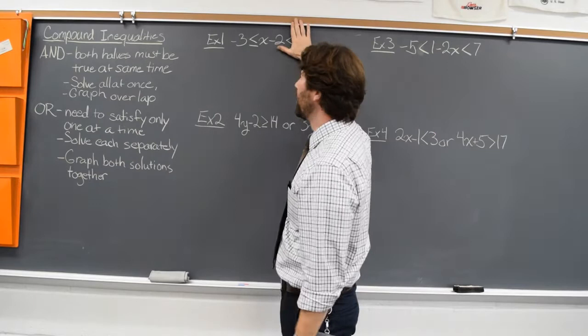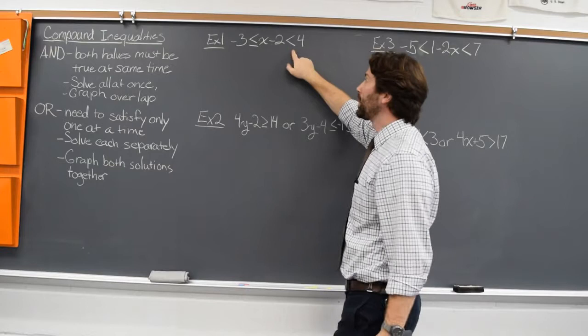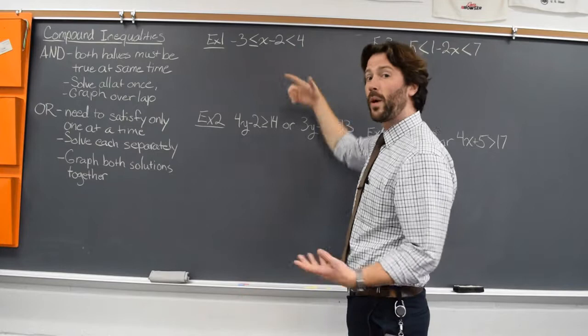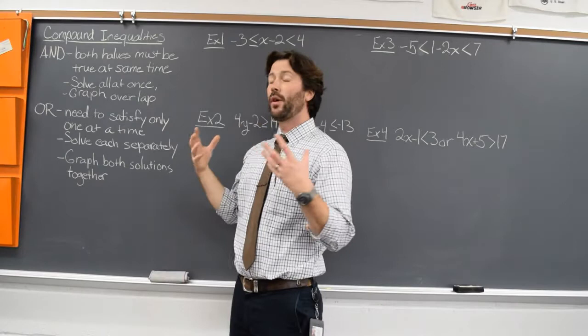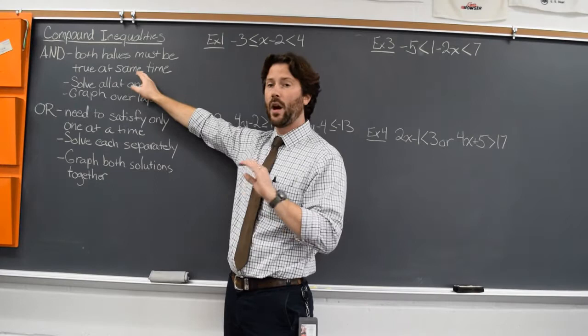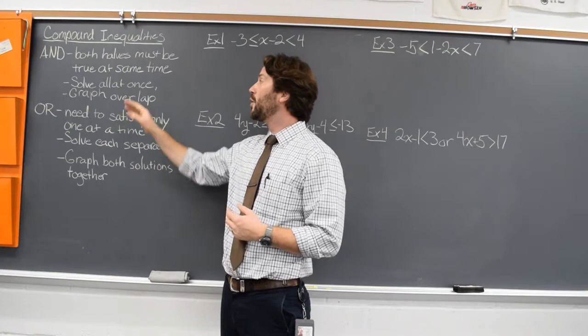If we had looked at ones in the past, there were just like negative three is less than or equal to x minus two. Well now we're saying negative three is less than or equal to x minus two, which is less than four — we're adding a little bit more to it. This is what's called an and inequality. There are two parts of this inequality pushed together, and we need to satisfy the whole thing all at once. Both halves of that inequality must be true at the same time.